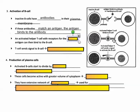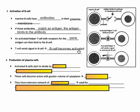An activated helper T cell with the same antigen receptors then binds to that B cell. The T cell sends a signal to the B cell, and the B cell becomes activated. It's almost like requiring several sources of verification before allowing the next stage to happen.